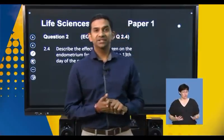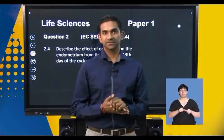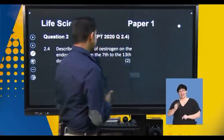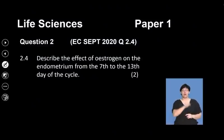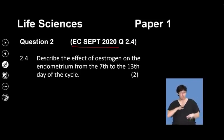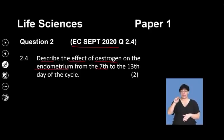We're back into the second segment of this session. We're going to continue with the female reproductive system and look at a few more questions. This question was taken from a paper written in the Eastern Cape in 2020. Expose yourself to many different questions from different examining boards — the more you do that, the better. The question requires us to describe the effect of estrogen on the endometrium from the 7th to the 13th day of the cycle.